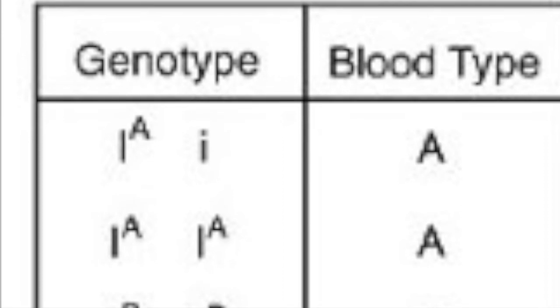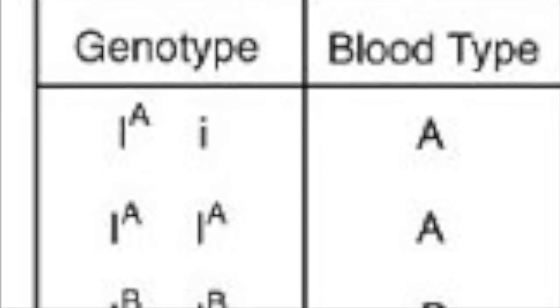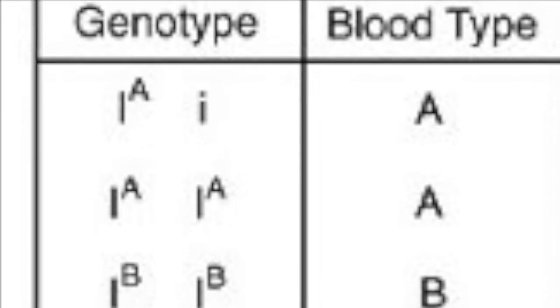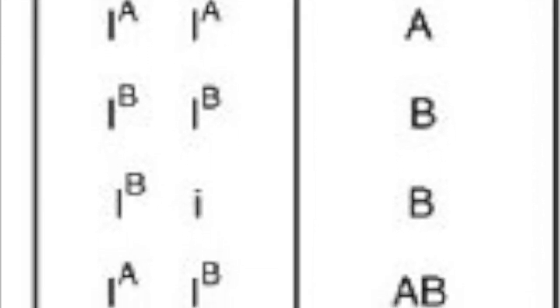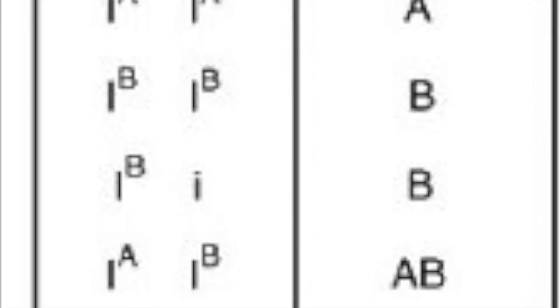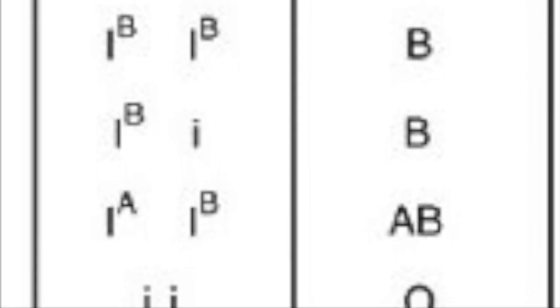And so with the blood types, in AB we have A with a capital I and B with a capital I. For B, it could either be B capital I, B capital I, or B capital I and B lowercase I. And the baby's blood type is AB.